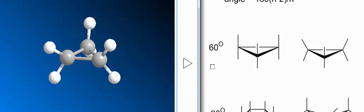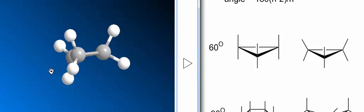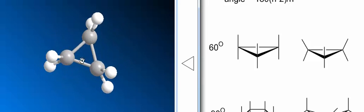So the two forms of main strain energy in cyclopropane are the torsional interactions because we've eclipsed these bonds, and then the angle strain.